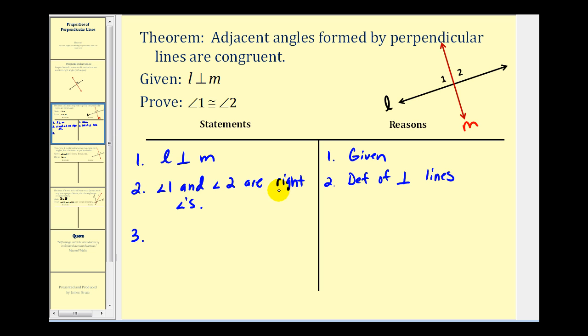And if angle one and angle two are right angles, we know the measure of angle one equals 90 degrees, and the measure of angle two equals 90 degrees. This is by definition of right angles.